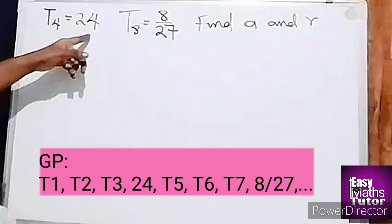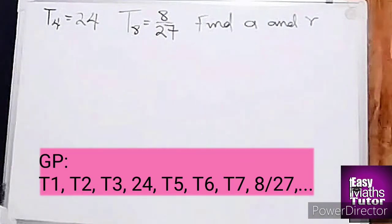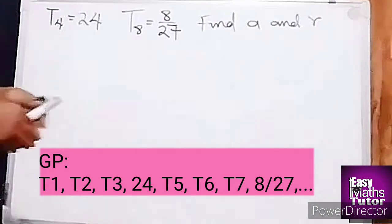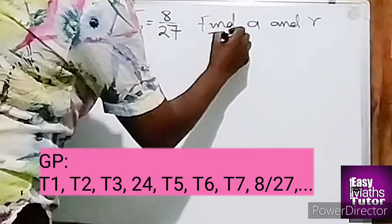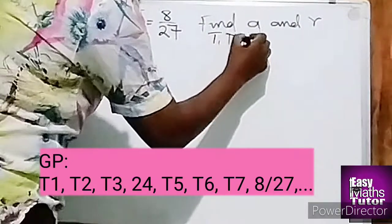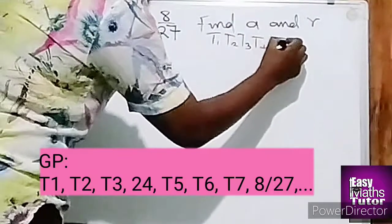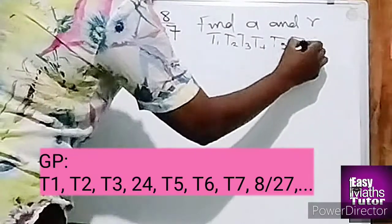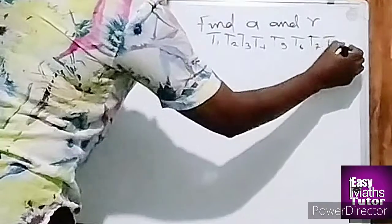The fourth term is 24 and the eighth term is 8 over 27. That means you have T1, T2, T3, T4, T5, T6, T7, T8 and so on.